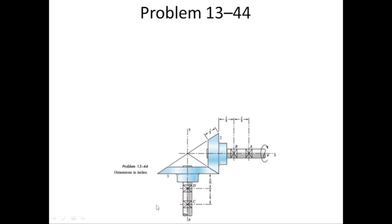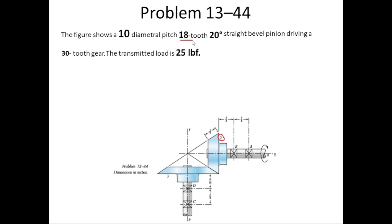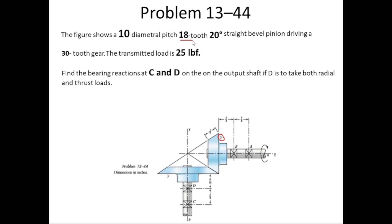In today's lecture we will solve problem 13.44, which is about bevel gear force analysis. The given data: diametral pitch is 10, there are 18 teeth on gear 2, the pressure angle is 20 degrees, and 30 teeth on gear 3. The tangential force transmitted on gear 3 due to gear 2 is 25 pound-force. We have to find the reaction forces at bearings C and D.